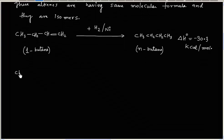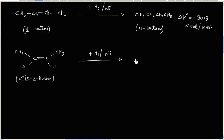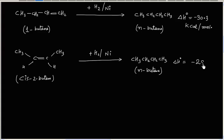Now if cis-2-butene is hydrogenated, we once again get the same product — normal butane — and this time the standard heat of hydrogenation value is minus 28.6 kilocalorie per mole.